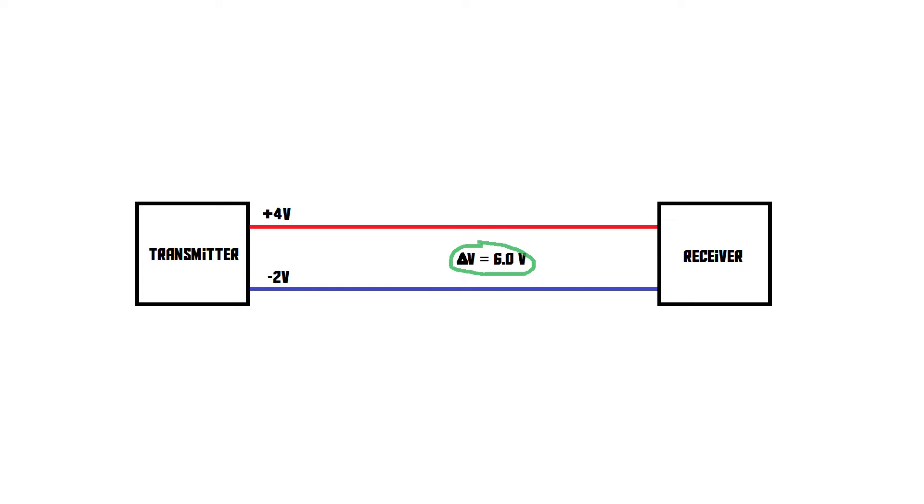The way we get information across is by varying this difference. So the transmitter constantly varies the difference in voltage between the wires. These variations are picked up by the receiver, which can then decode them depending on what kind of communication line this is.